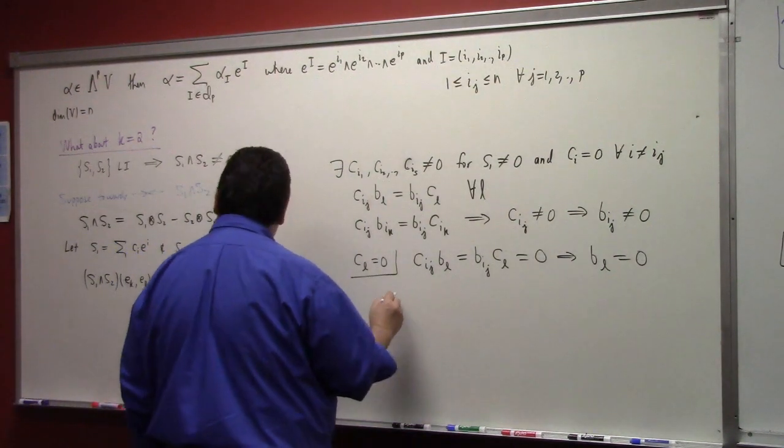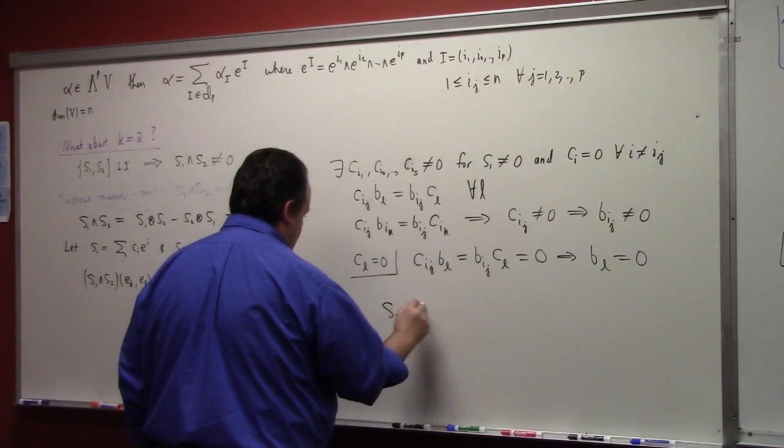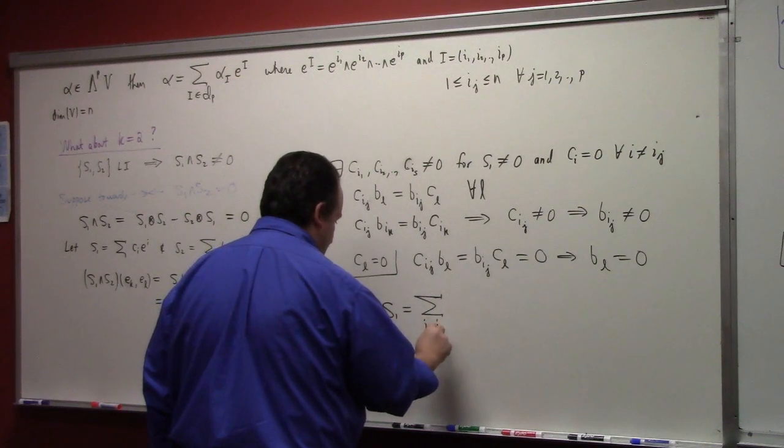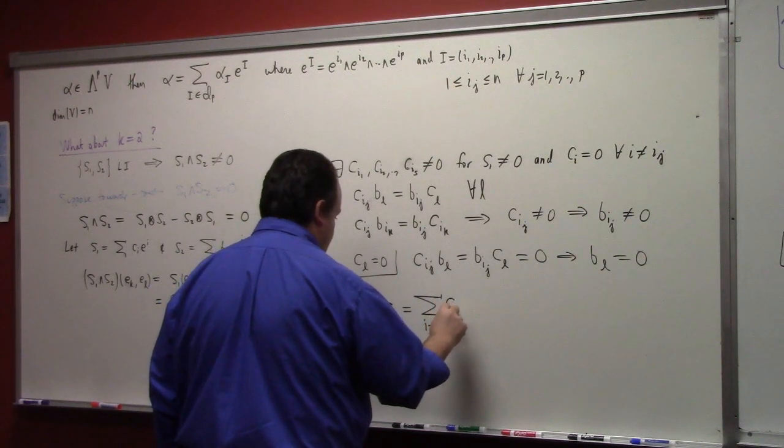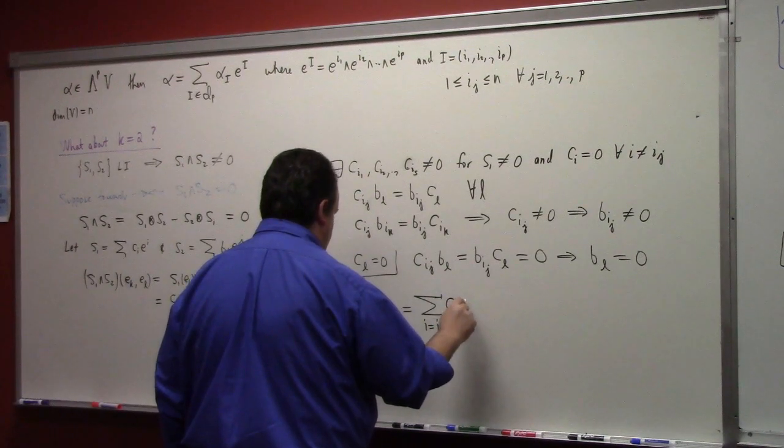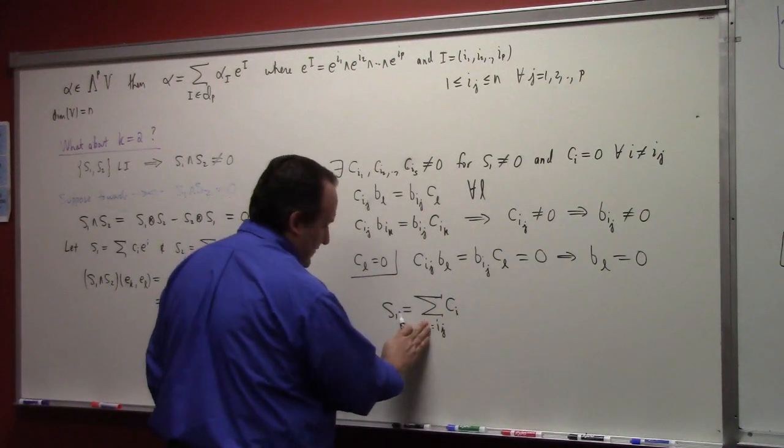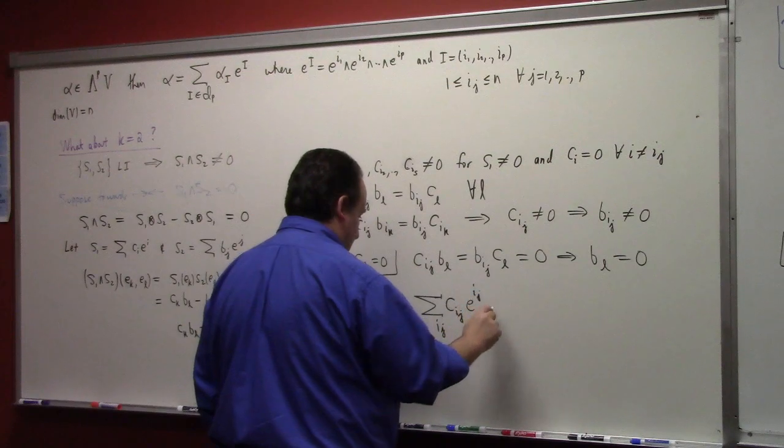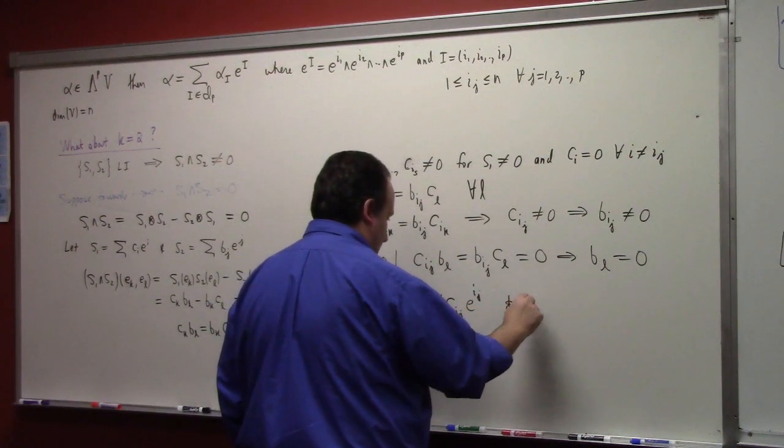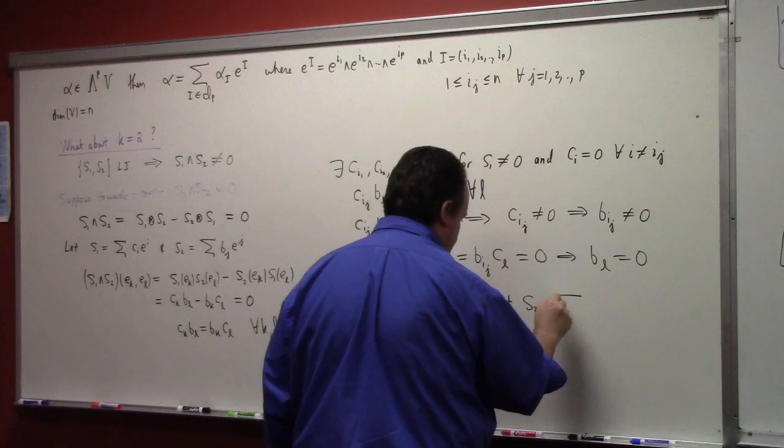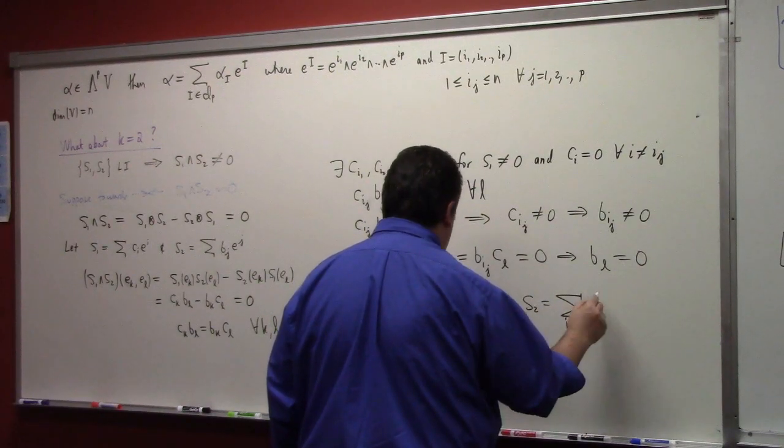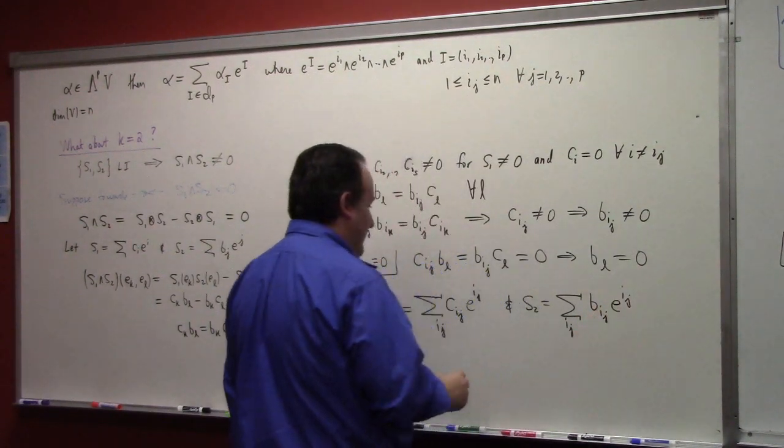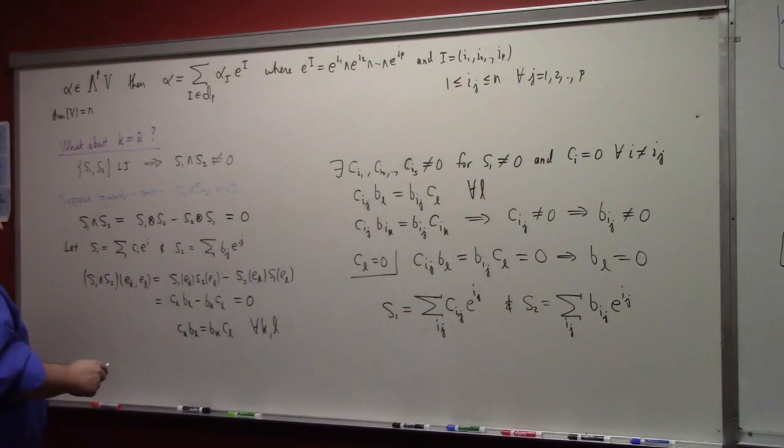So what that means, then, is that we've got S1 is equal to the sum over i equals to ij of C_i, sum over ij Cij E i sub j, and likewise S2 is equal to the sum over these particular indices, B ij E ij.